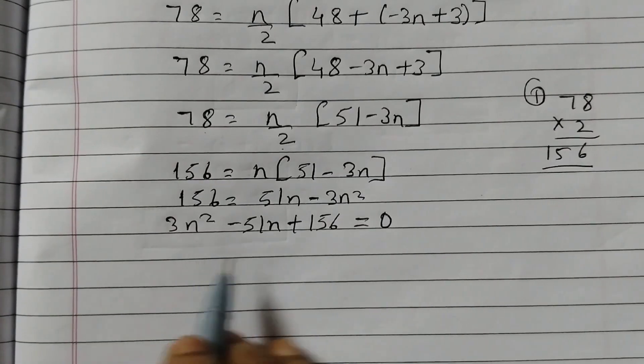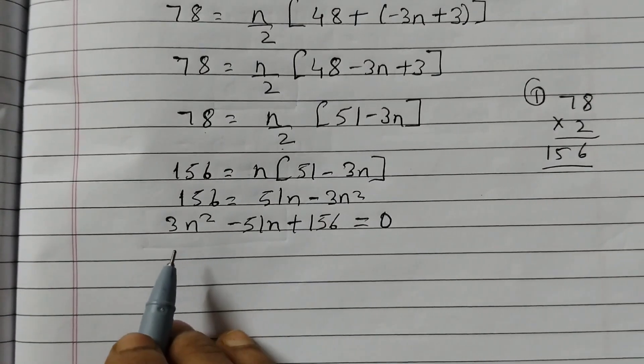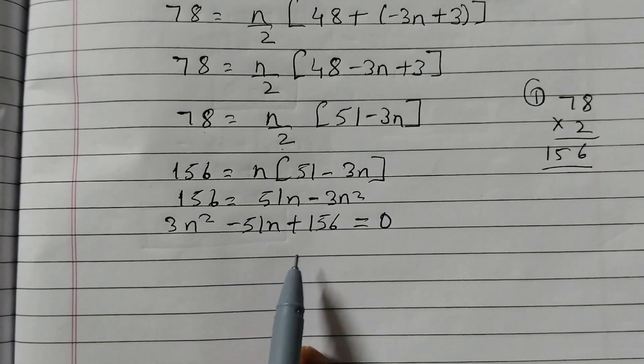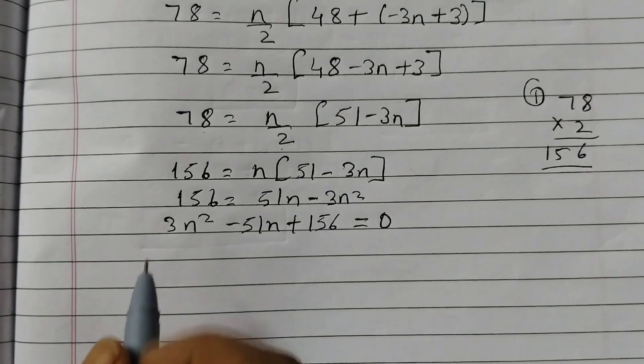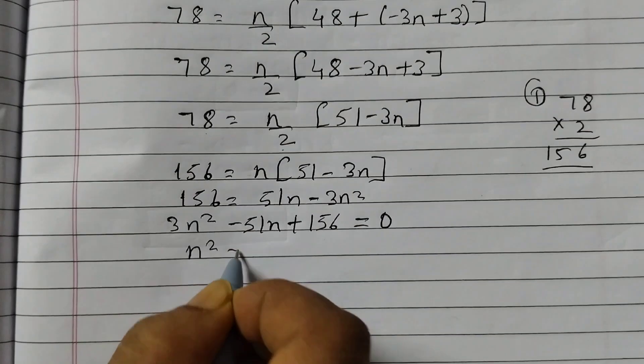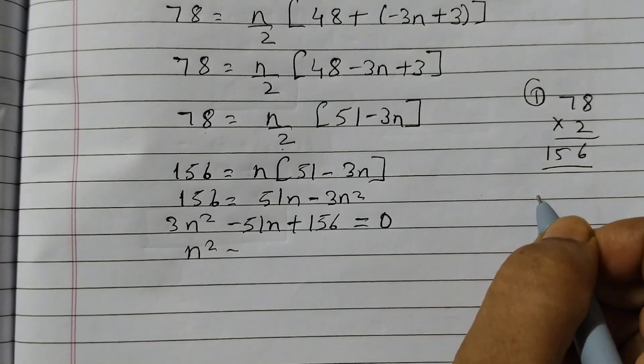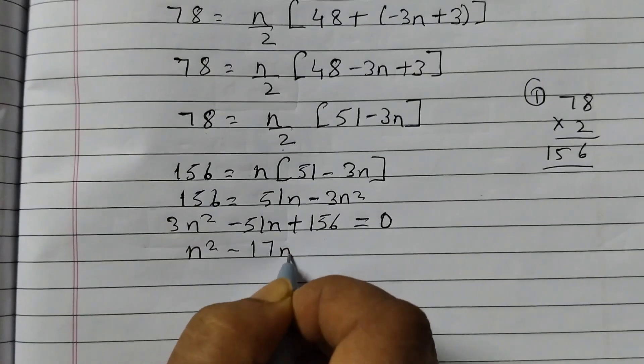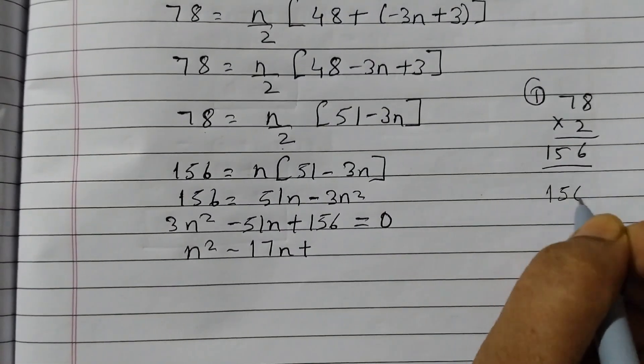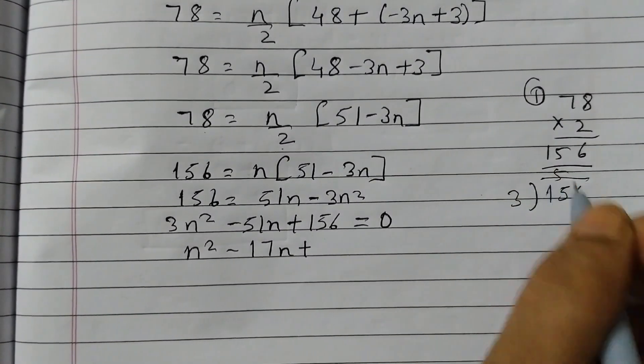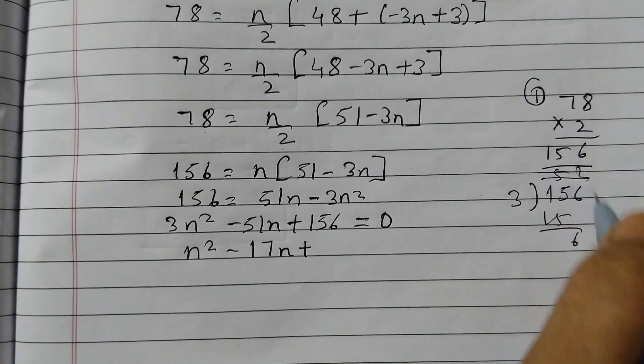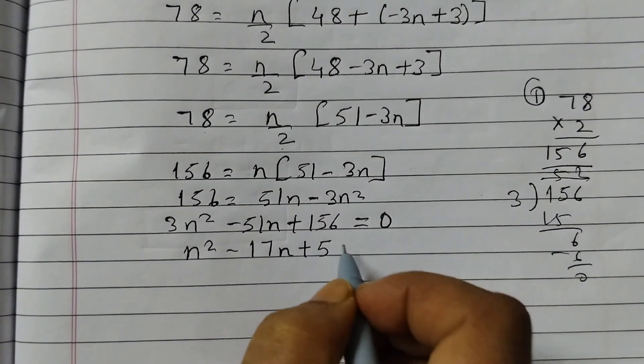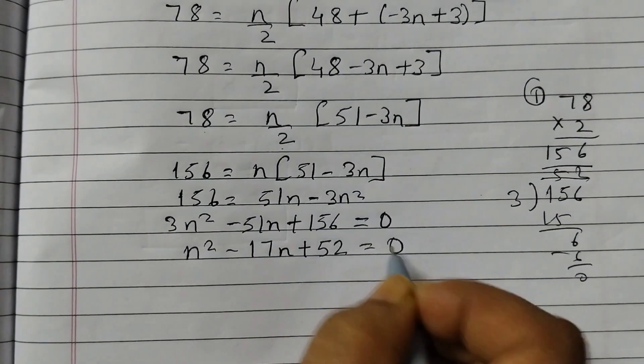Now we need to find out the factors of this. So first we will divide all the terms by 3. Divide all the terms by 3 because 3 is a common factor. So n squared, 51 divided by 3 is 17, 156 divided by 3 is 52 equals to 0.